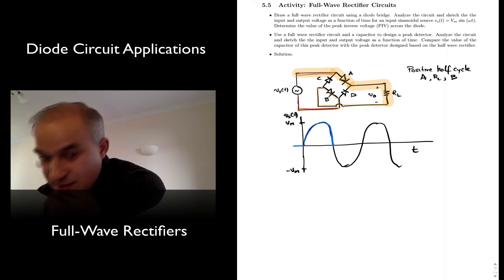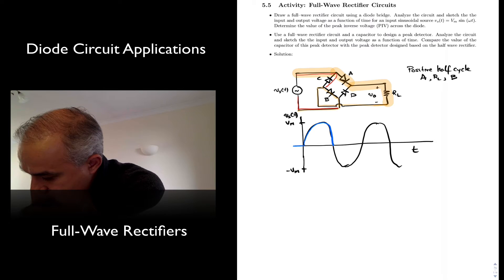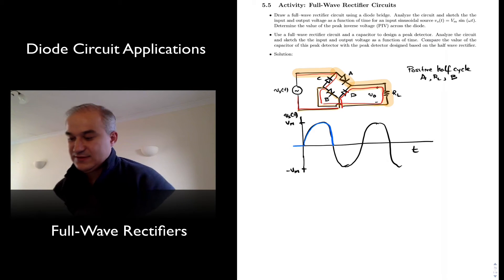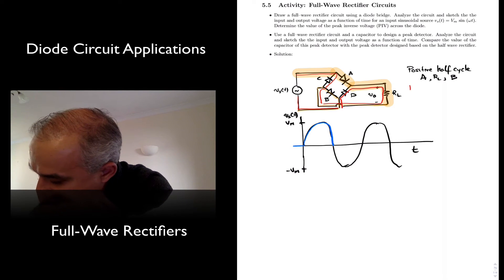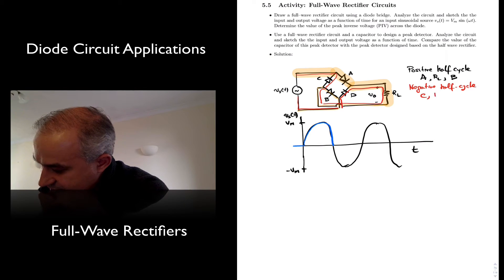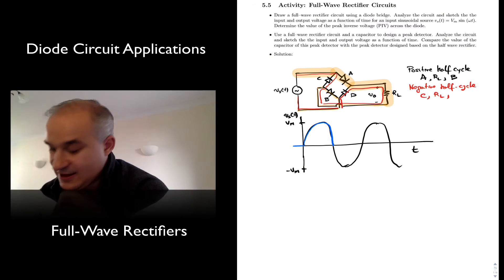But C is going to be conducting. B is open. So we have here, RL, and then D conducts. So during the negative half cycle, you have conduction through C, RL, D. Okay?